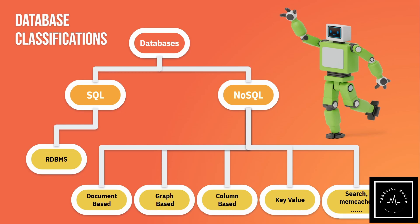Graph databases handle different relationships as use cases. For one database with one concept, it will be very useful and efficient.